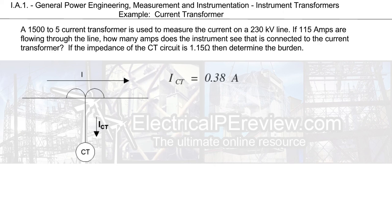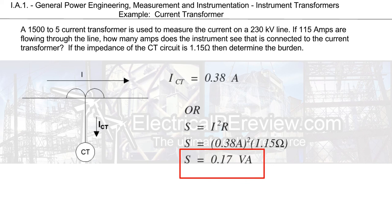Alternatively, another way to solve for the same thing, it's a little bit quicker. We can use our power formula of I squared R, plugging in our CT amps and solving for our burden. We arrive at the same answer of 0.17 volt amps.